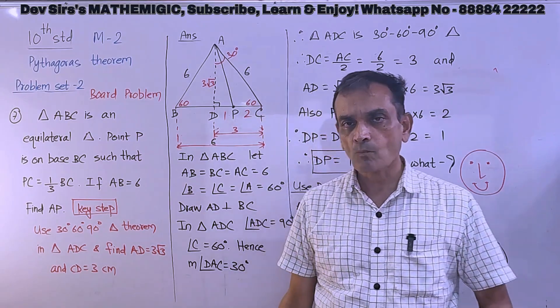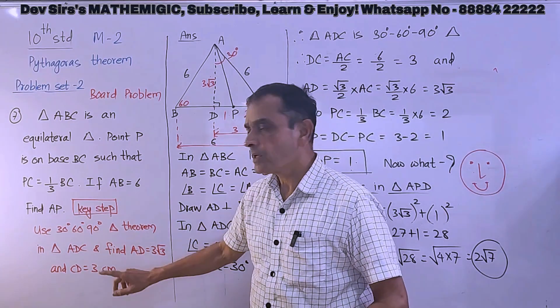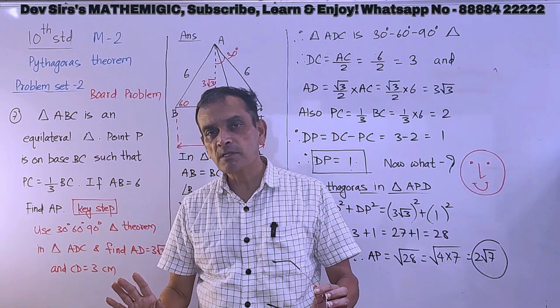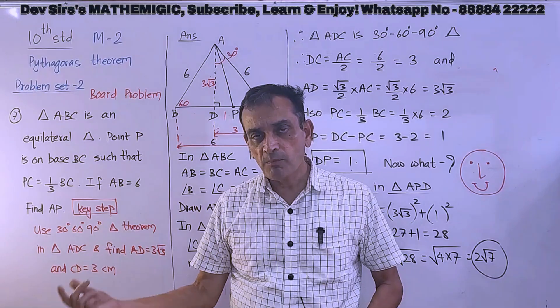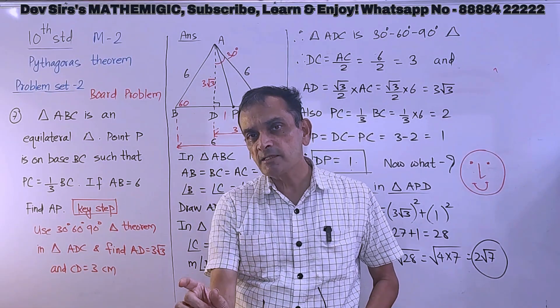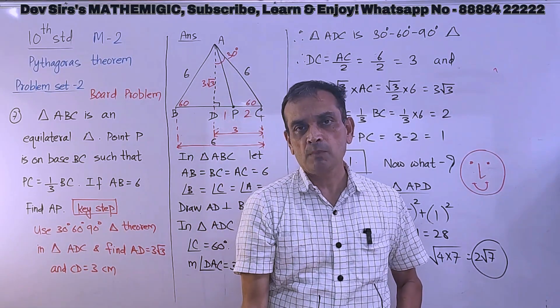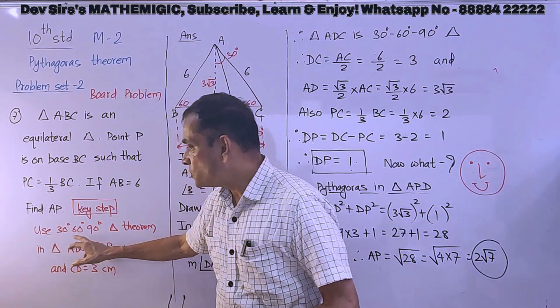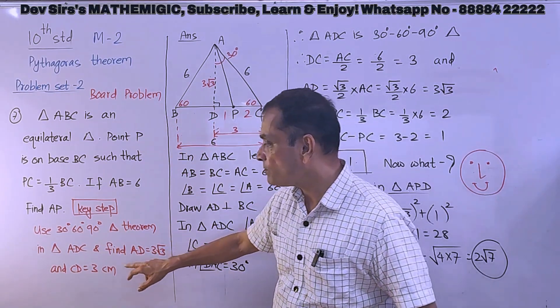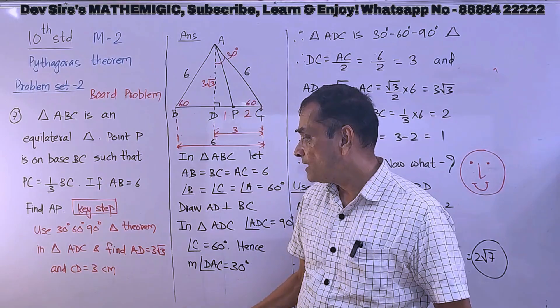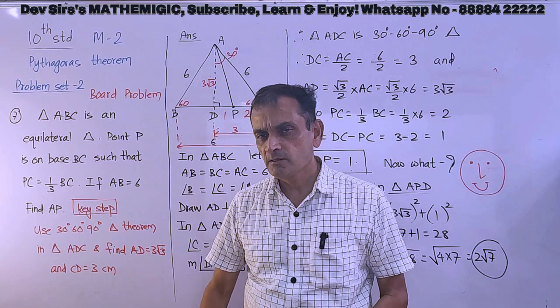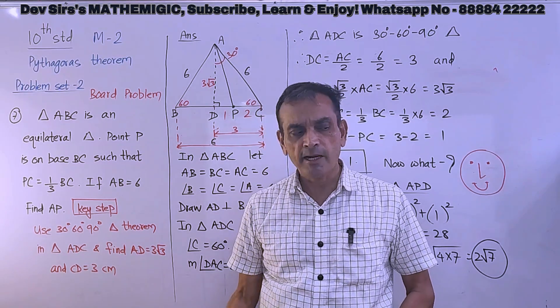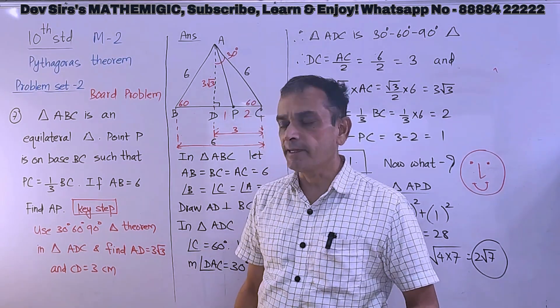Key step: This is an important sum. You know my method - I will be giving a key step. Remember that, based on that key step you can analyze the full problem. So what is the key step? Use 30-60-90 triangle theorem in triangle ADC and then find AD and CD as shown. Just remember the key step. So actually we will begin now.